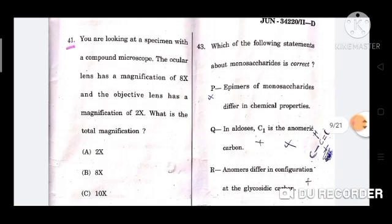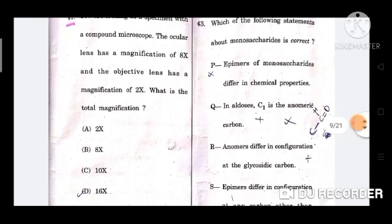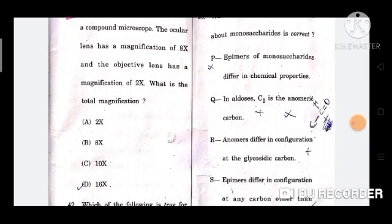Next question: You are looking at a specimen with a compound microscope. The ocular lens has a magnification of 8x and the objective lens has a magnification of 2x. What is the total magnification? The correct answer is option D, 16x.